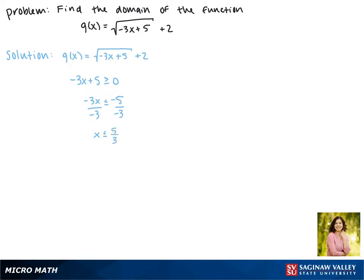This tells us that our function only exists when x is less than 5 thirds. So now we can find our domain. We're going to write this in interval notation. Since we said it has to be less than 5 thirds, that means that it'll exist from negative infinity to 5 thirds. And nothing beyond 5 thirds, but since it can be equal to 5 thirds, it gets a square bracket instead of a parenthesis. So this is our domain.